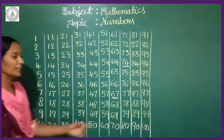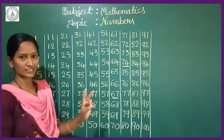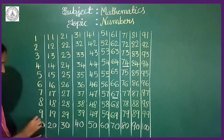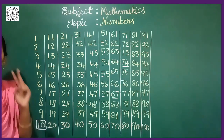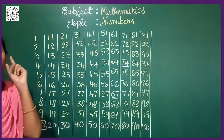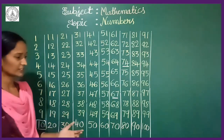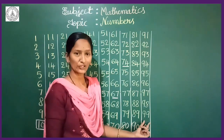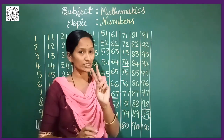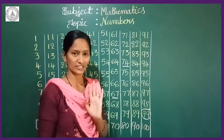So from 10 to 99, you are getting 2-digit numbers. One thing I want to share with you: look here, this 10 is the first 2-digit number and also the smallest 2-digit number. And next, come to 99 — this 99 is the biggest 2-digit number and also the last 2-digit number.